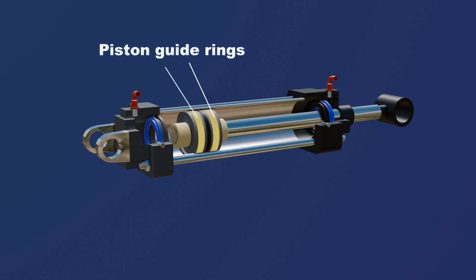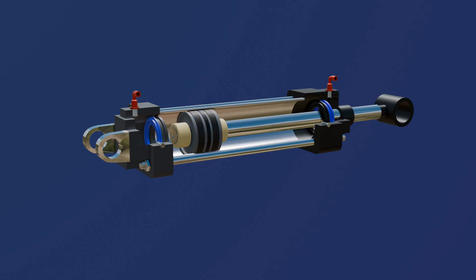These are the piston guide rings — cylindrical rings that fit around the piston inside the cylinder. Their primary function is to ensure smooth and precise linear motion between the piston and the cylinder wall by preventing metal-to-metal contact.